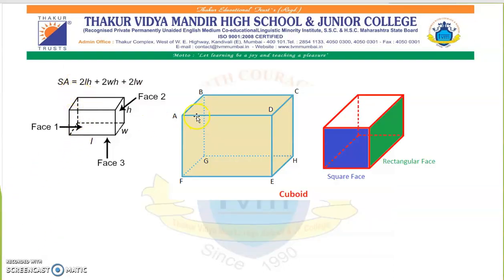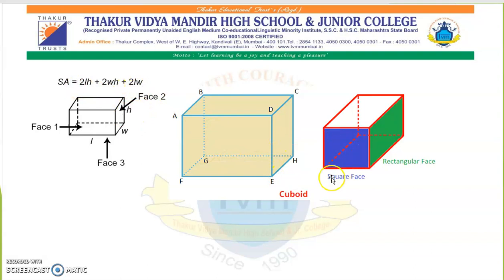Total surface area of the cuboid — you can see it is a rectangular face. This will be equal to 2(L × H) + 2(width × height) + 2(height × width). Because opposite faces have the same area, it becomes 2LH + 2BH + 2LB.